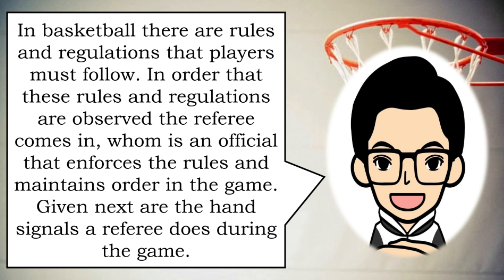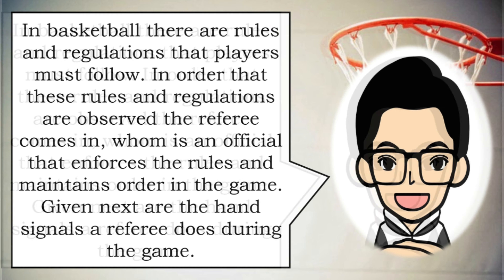In basketball, there are rules and regulations that players must follow. In order that these rules and regulations are observed, the referee comes in. The referee is an official that enforces the rules and maintains order in the game. Next are the hand signals a referee uses during the game.